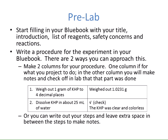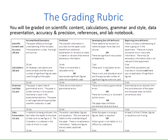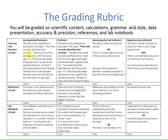The other approach is to write all your steps and leave extra space between them to make notes — more horizontal rather than vertical. On Blackboard you will also find the grading rubric. You will be graded on scientific content and accuracy, calculations and significant figures, grammar and style, data presentation including figures and tables, accuracy and precision of data, references and their formatting, and keeping a lab notebook. You can print the rubric from Blackboard to review the criteria in more detail.